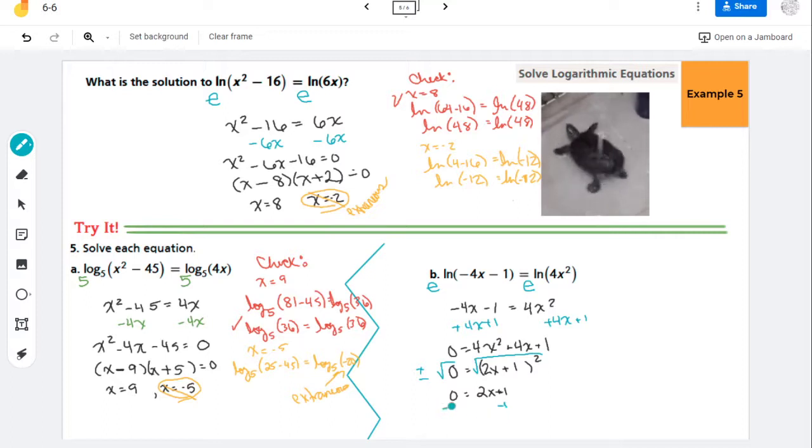So I'm going to go ahead and subtract 1. So I have -1 = 2x. And then divide by 2. It's a little squished down here. So my potential solution is x = -1/2.